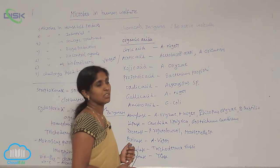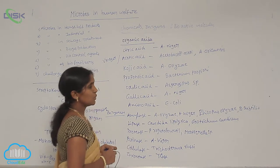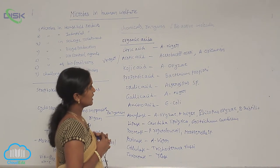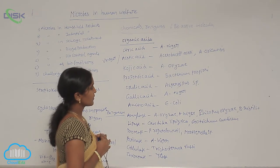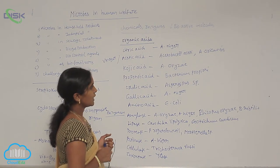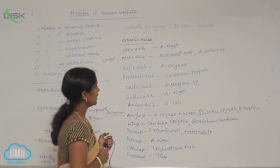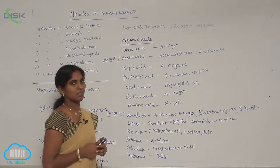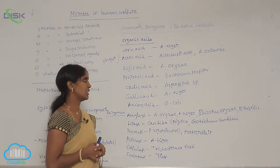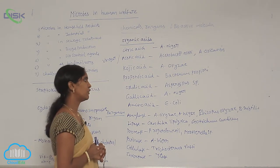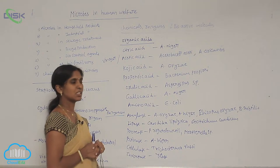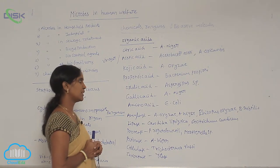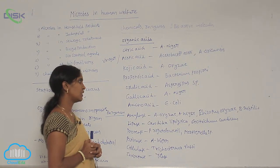Propanoic acid is used in industry and is extracted from the bacterium Propionibacterium. Oxalic acid is obtained from Aspergillus cultures. Gallic acid is obtained from Aspergillus niger.